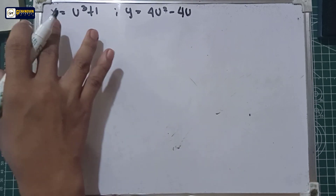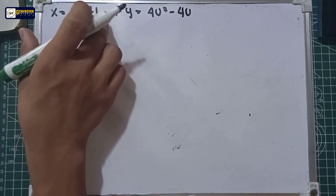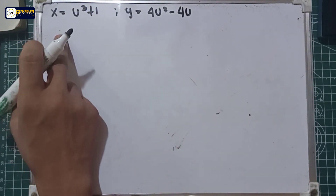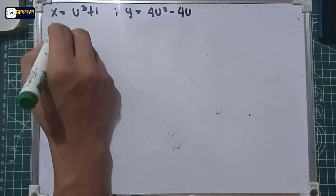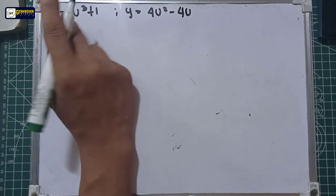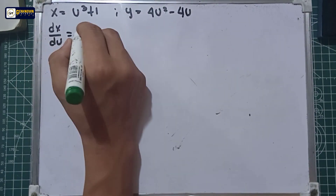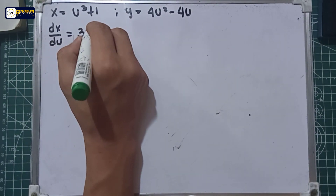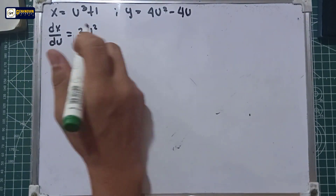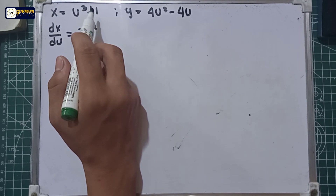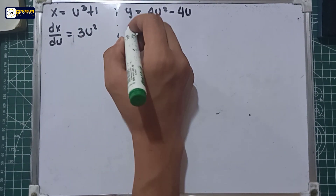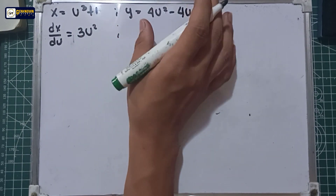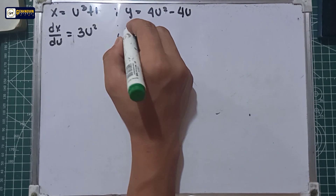We will be deriving x with respect to its parameter u. So dx over du is equal to 3u squared, and the derivative of a constant is equal to 0. For dy, we will be deriving y with respect to u.